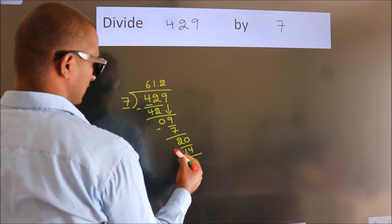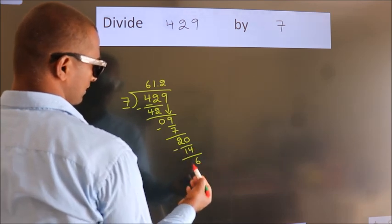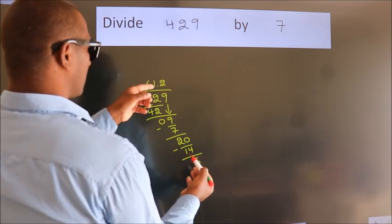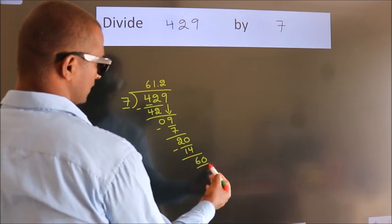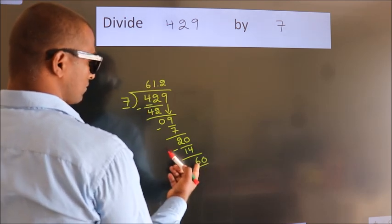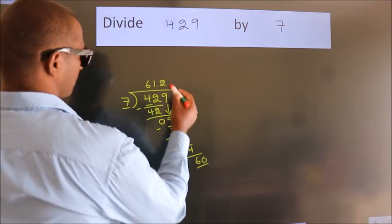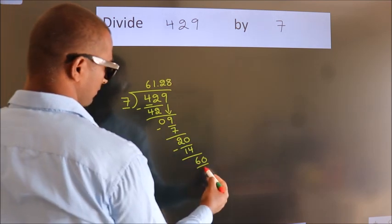Now we subtract, we get 6. After this, we already have the decimal. So directly take 0. So 60. A number close to 60 in 7 table is 7 times 8, which is 56.